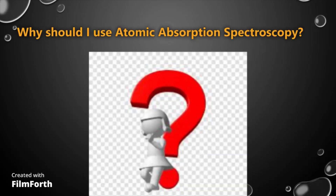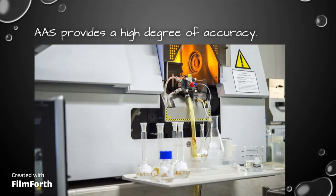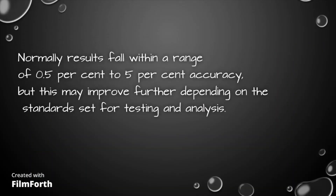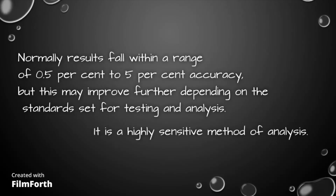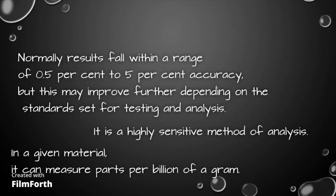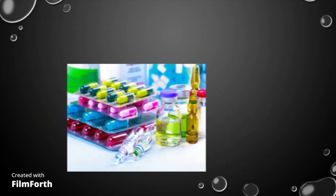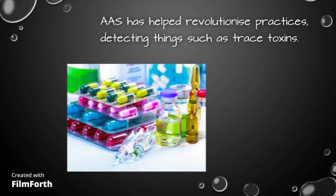Why should we use Atomic Absorption Spectroscopy? AAS provides a high degree of accuracy. Normally, results fall within a range of 0.5% to 5% accuracy, but this may improve further depending on the standard set for testing and analysis. It is a highly sensitive method of analysis. In a given material, it can measure parts per billion of a gram. In applications such as medicine and pharmaceuticals, AAS has helped revolutionize practices, detecting things such as trace toxins.